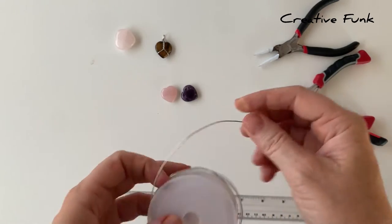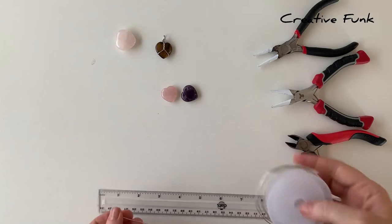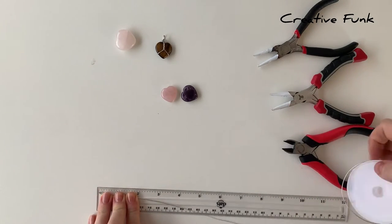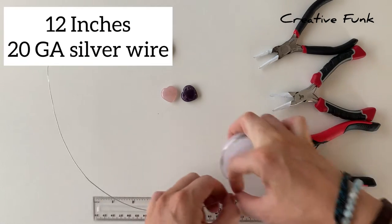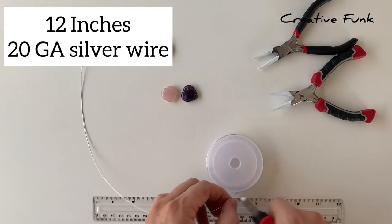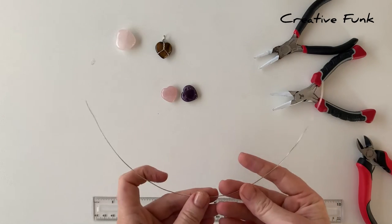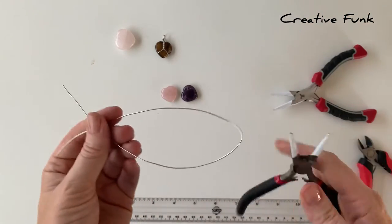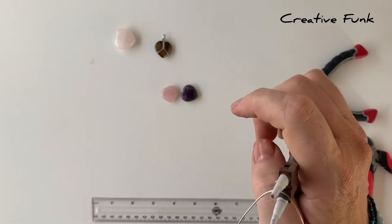We start out with about 12 inches of 20 gauge dead soft silver wire. Then we need to find the middle of our wire there and make a bend in it. We're going to start to make our bail in the middle there.